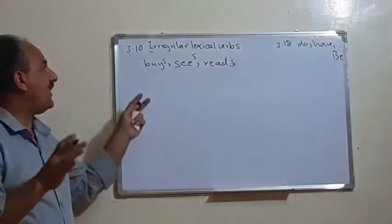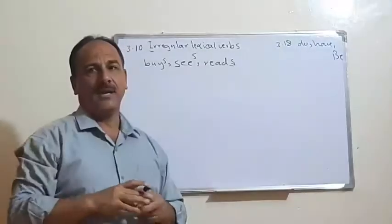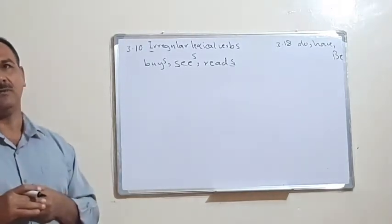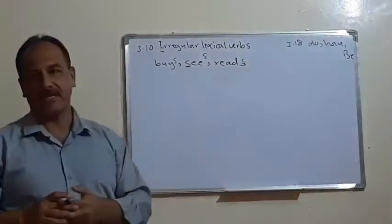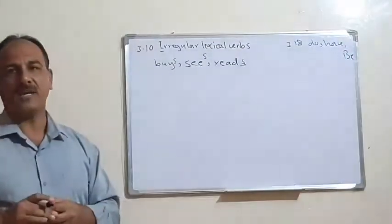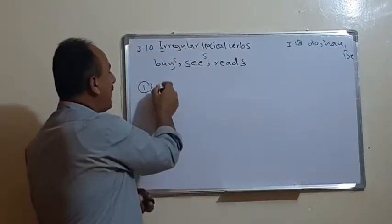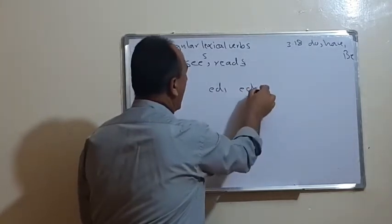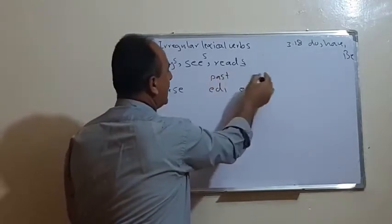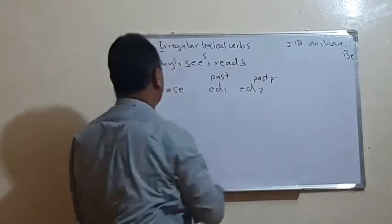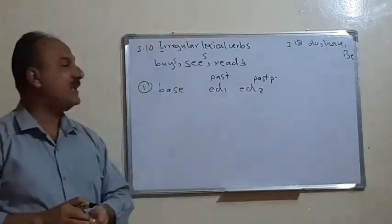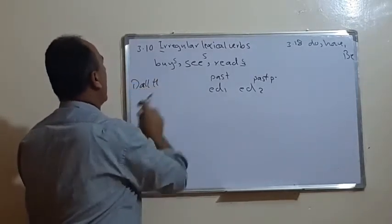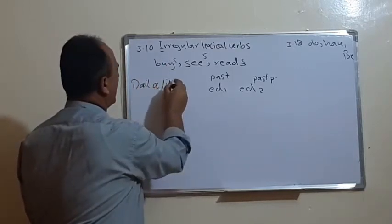Although irregular verbs are themselves irregular, they can be classified into categories to facilitate memorization. They can be grouped into four main groups. The first group is when the base, ed1 (past), and ed2 (past participle) are all the same — we call this 'all alike', meaning the base, past, and past participle are identical.